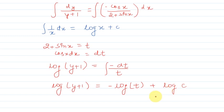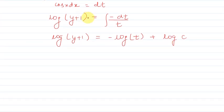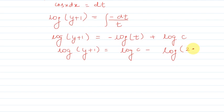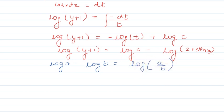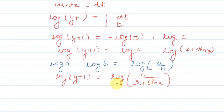We write C as log C. Using the property log a - log b = log(a/b), the right-hand side simplifies. So the left-hand side becomes log(y + 1) equal to log(C / (2 + sin x)). Since both sides are logs, we can remove the log, giving y + 1 = C / (2 + sin x).